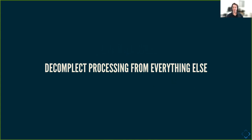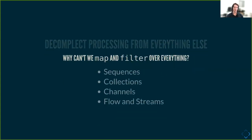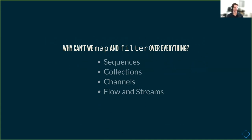We'll see exactly what that means, but how it plays out is, for example, looking at map and filter. Why can't we map and filter over everything? We can do it over sequences, like the Clojure core library sequences, but why not over Java collections, over new objects, over channels from core.async, over manifold streams, over util.concurrent flows, over core.logic streams? We don't want map and filter to be an ad hoc implementation every time from scratch, because the idea of what map and filter do is independent of those things.